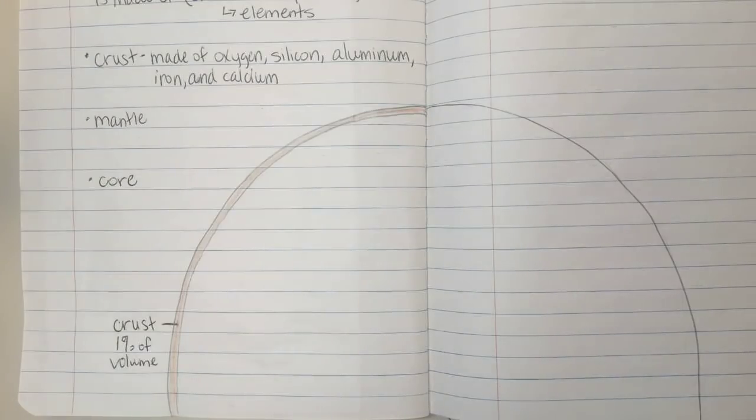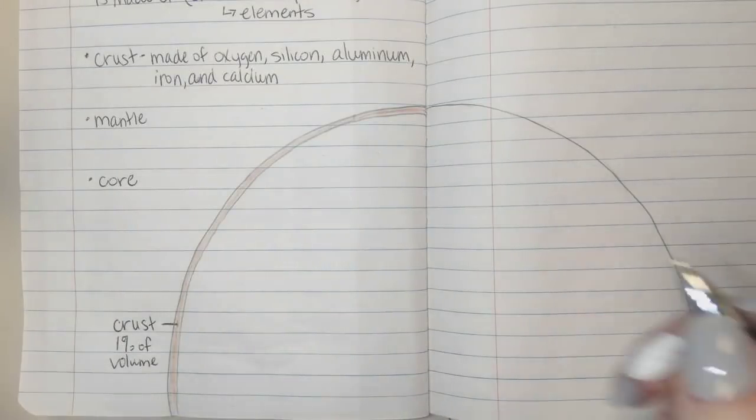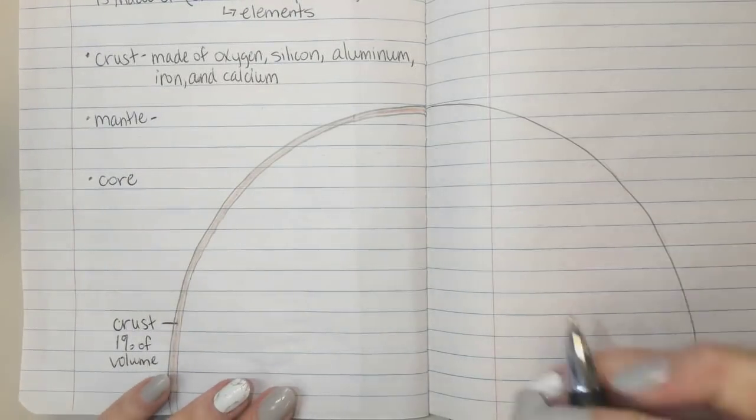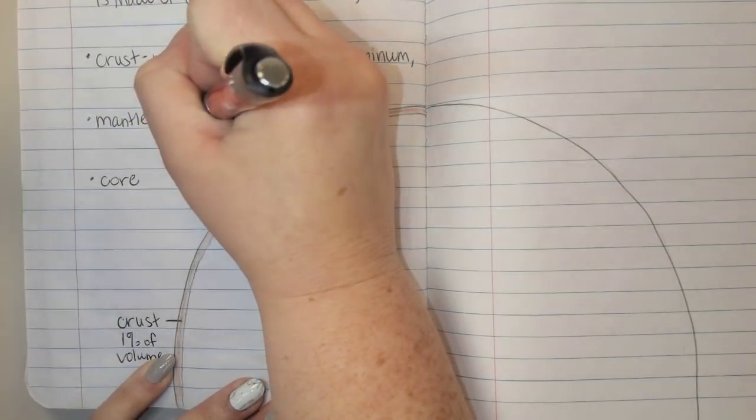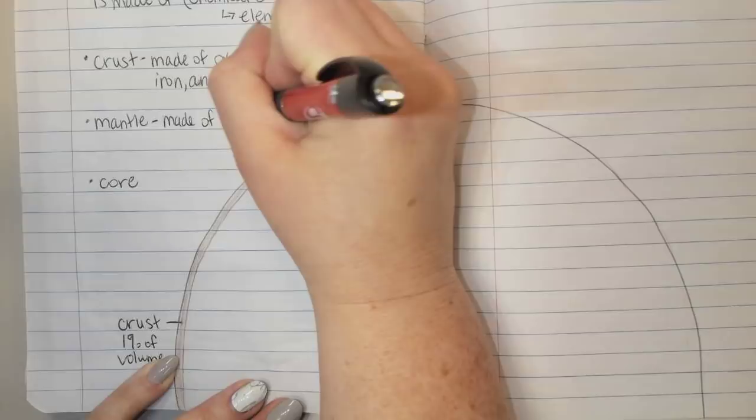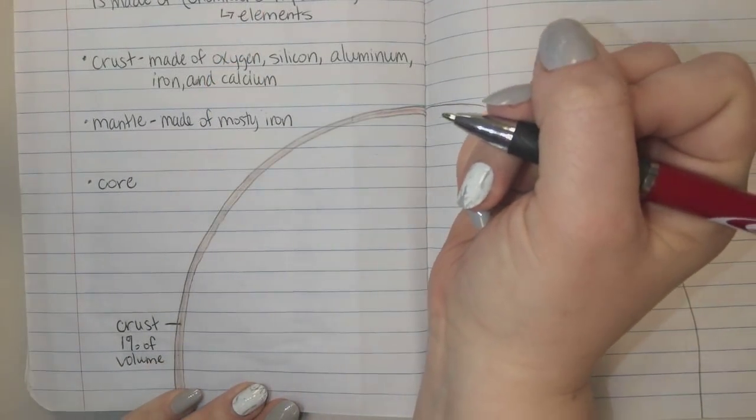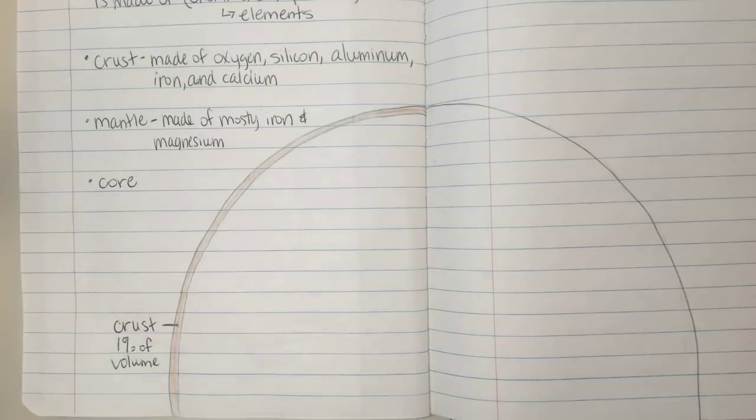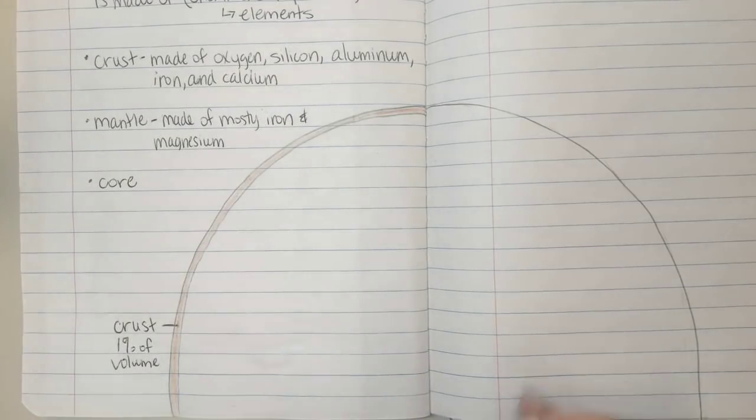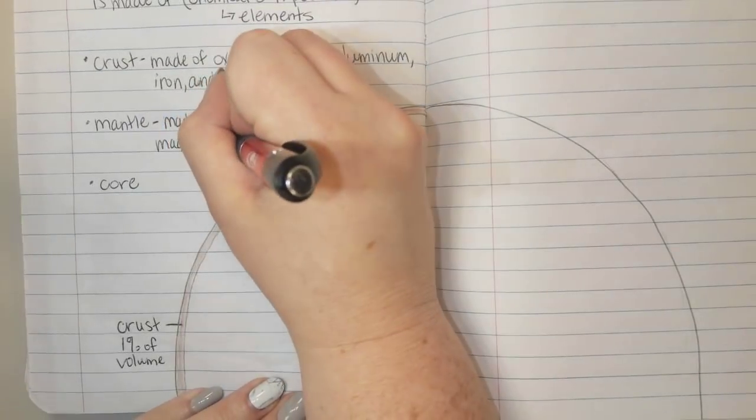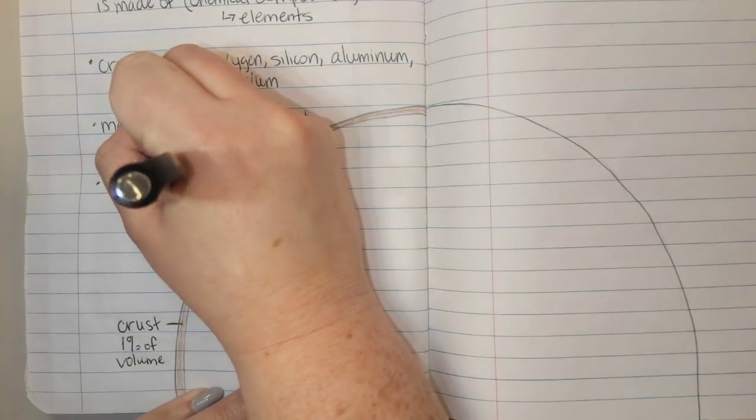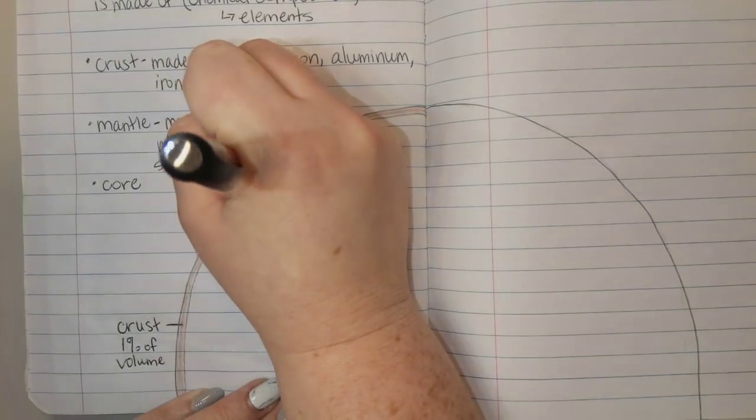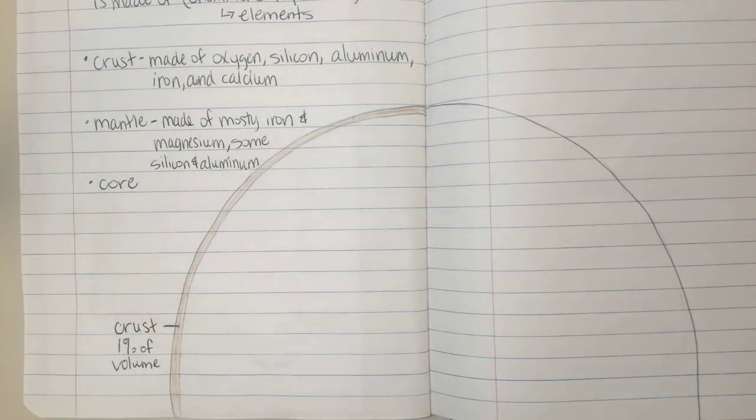The next layer is the mantle. The mantle is like the middle section, and I sometimes remember that by M for mantle and M for middle. The mantle is made of mostly iron and magnesium. Again, both elements on the periodic table that we talked about in the beginning of the year in our chemistry unit. It contains some silicon and aluminum, but mostly iron and magnesium.